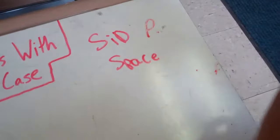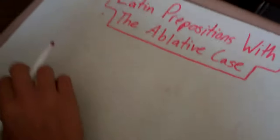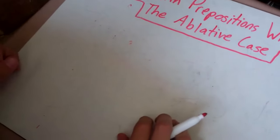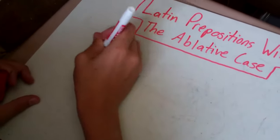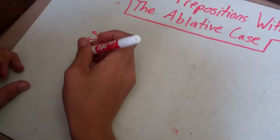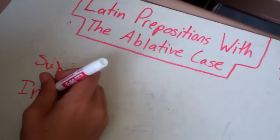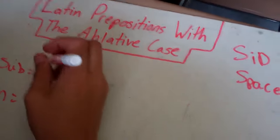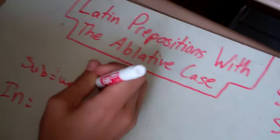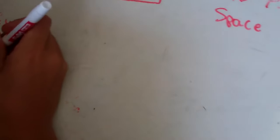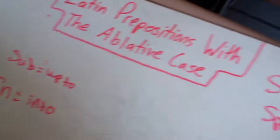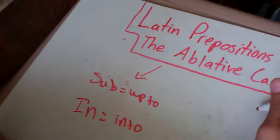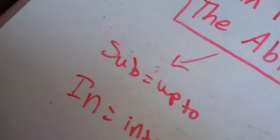There are also ablative prepositions that also take the accusative case, like sub or in. And when they take the accusative case, sub is up to and in is into. So those are still the prepositions with the ablative, but they also take the accusative.